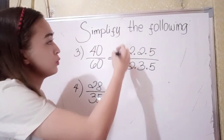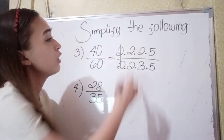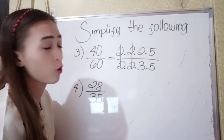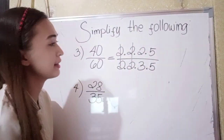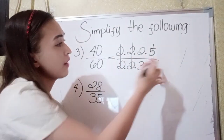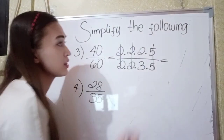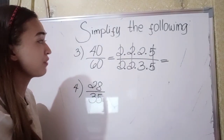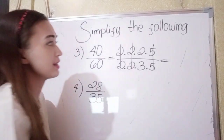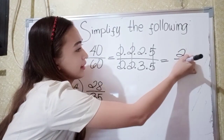2 divided by 2 is 1, so cancel. 2 divided by 2 is also 1, so that is also cancelled. And 5 divided by 5 is also 1, so that is cancelled. The simplified form of 40 over 60 is 2 over 3.